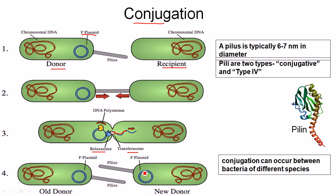After transferring the single-stranded plasmid, both bacteria can produce the double-stranded replicate from the single-stranded plasmid. Now the recipient bacteria, which did not previously have the ability to produce pili, can now produce pili. So this bacteria can now transmit the plasmid to another bacteria by its pili.